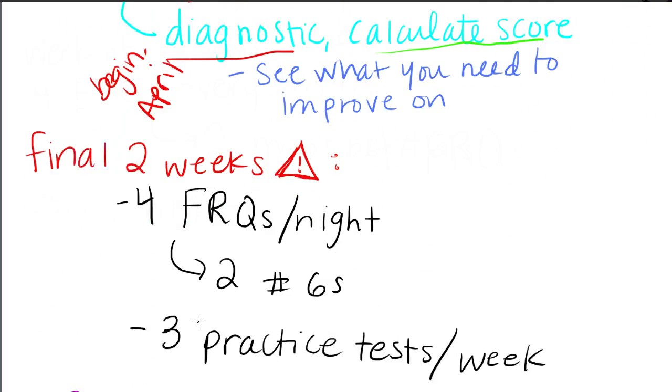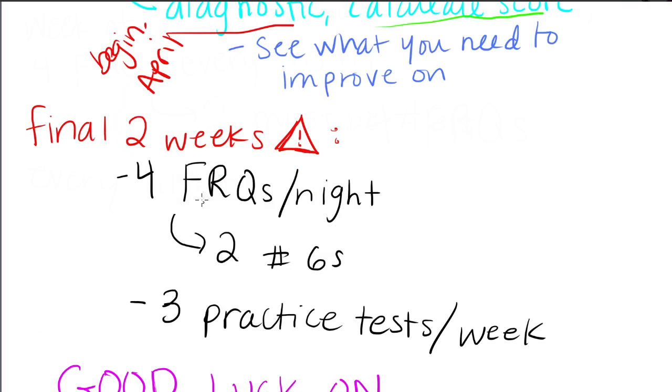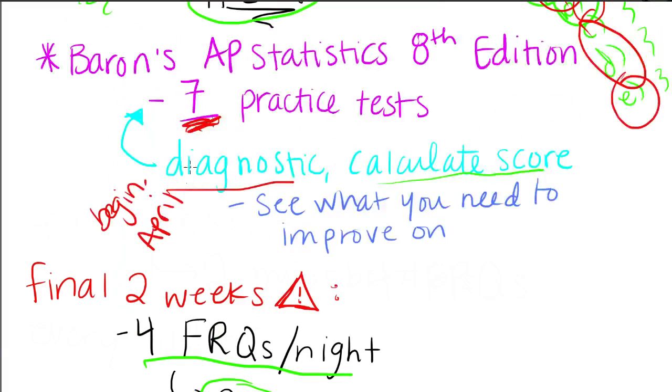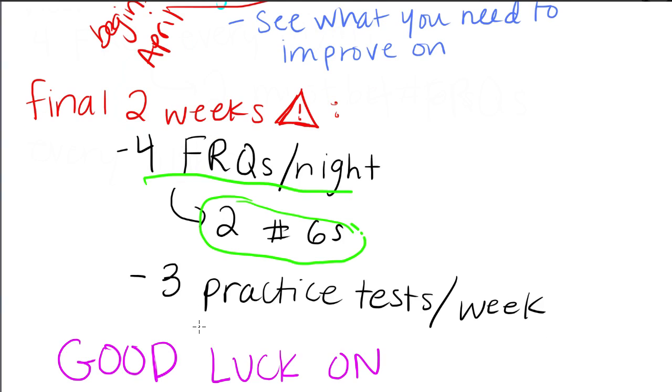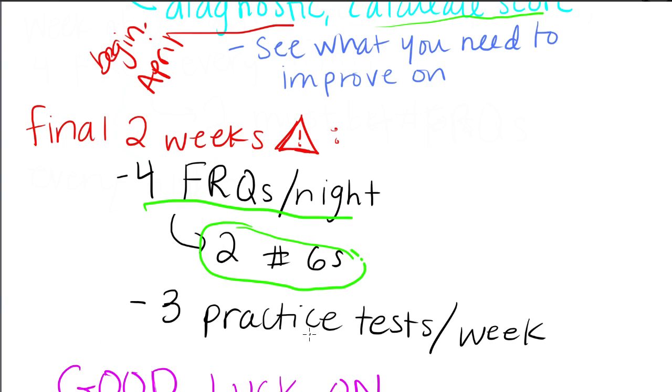And then in the final two weeks, you've got to do four FRQs every night and at least two of them to be number sixes. And also the Barron's AP Statistics review book has number sixes, so those are good reviews as well. And do three practice tests per week because you did one diagnostic and it leaves you with six left over. So in the final two weeks, do three each week and you should be good.